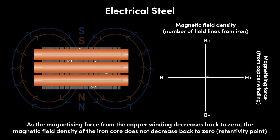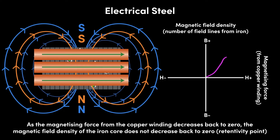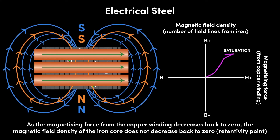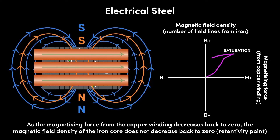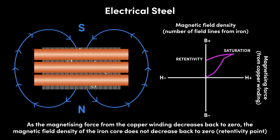For an electromagnet with a direct current DC supply, which maintains magnetism with constant polarity, such as an electromagnet in a scrap yard used for picking up scrap, a high retentivity point may be considered a good thing, since each time the electromagnet is switched on, fewer fresh field lines need to be added to reach maximum magnetization. However, for an electromagnet in an AC motor, a high retentivity point is not a good thing.